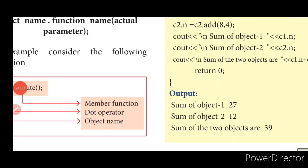This is all the reduced portion for lesson fourteen. Today we saw: what is a class, what is an object, how to create objects, what are access specifiers, and how memory allocation is done for objects. We shall proceed with the rest in the next class. Thank you.